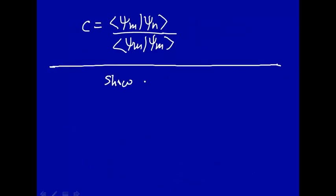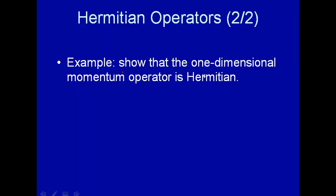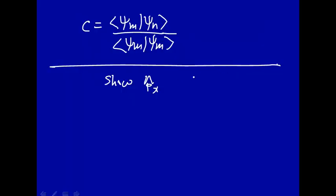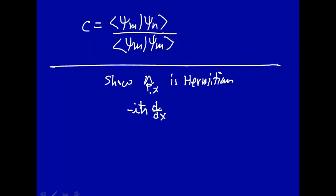We want to show that the momentum operator — one-dimensional, where x is the one dimension — is Hermitian. The momentum operator is minus i h-bar d by dx. So we want to show that this operator is Hermitian.